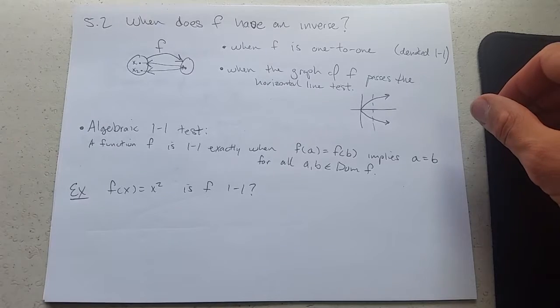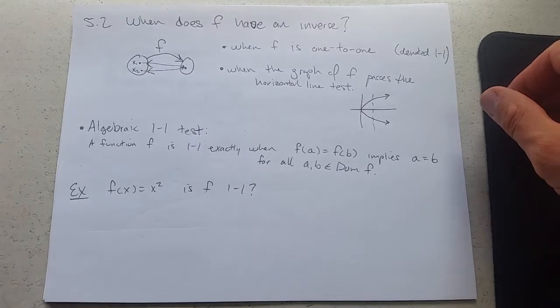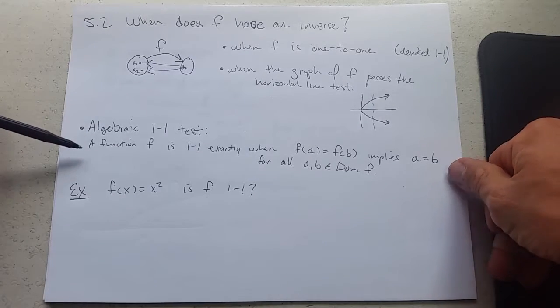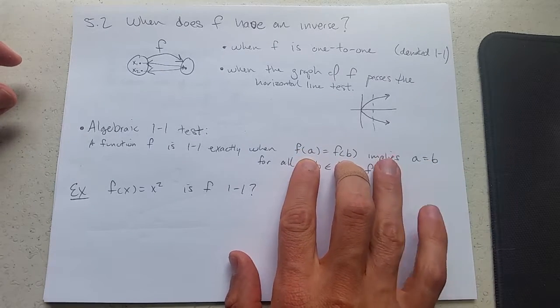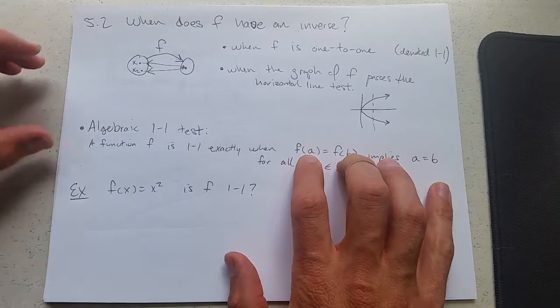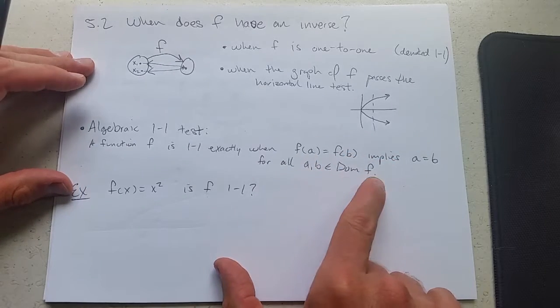Now if you don't have a graph, how do you know you're one-to-one? We can do the one-to-one test. The function is one-to-one exactly when f of a equals f of b implies a equals b, and this should be for all a and b in the domain.